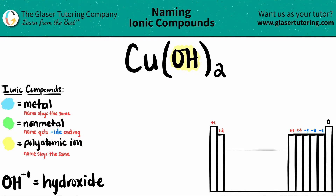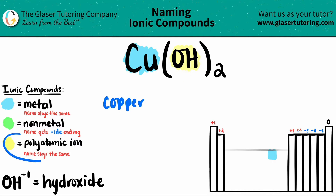Here's the OH. And because it's ionic, the Cu is the metal. Copper, which is Cu, should be somewhere around here on the periodic table. Now when you're naming, the metal name always stays the same, so Cu is copper. And the OH, which is the polyatomic — that name always stays the same as well. Since OH is hydroxide, it's going to stay as hydroxide.